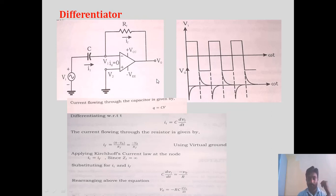IF can be written as (V1 − V0) / RF. Since V1 is 0, the expression becomes minus V0 divided by RF.